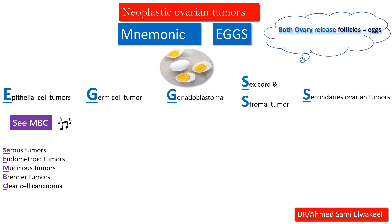In CEMBC: S for serous tumors, E for endometrioid tumors, M for mucinous tumors, B for Brenner tumors, and C for clear cell carcinoma.